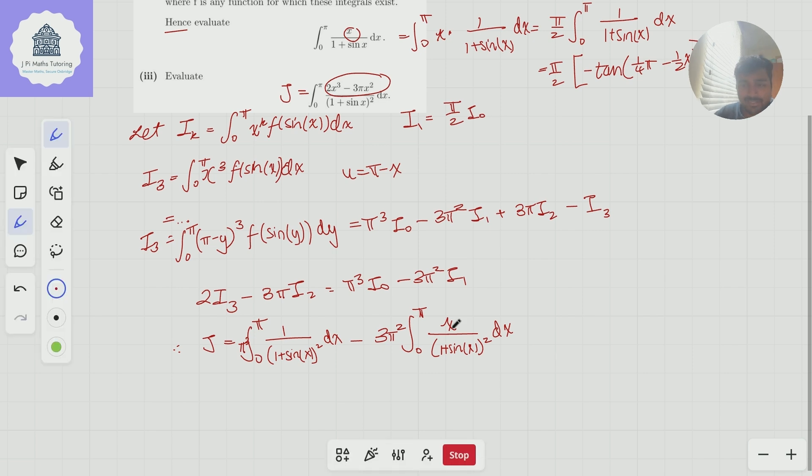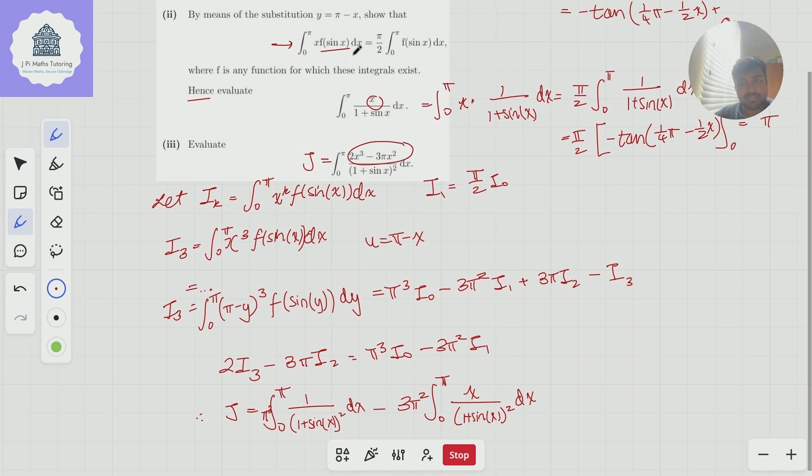Except what we can do now is actually turn this x over 1 plus sine x squared back into a constant divided by 1 plus sine x squared using this rule we had from earlier. So we can use this rule again, but down here on this integral. And this will be really nice, because then we're just going to have some constant divided by 1 plus sine x squared dx.